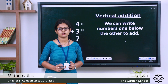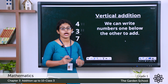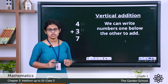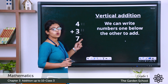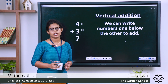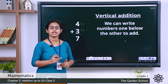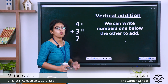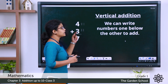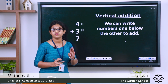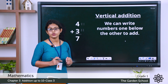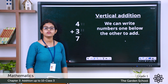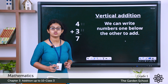Now let's see vertical addition. What is vertical addition? That is writing numbers vertically — one below the other. For example, 4 plus 3 written vertically has 3 below 4. For this you can also draw lines. For number 4 draw 4 lines, then for 3 draw 3 lines. Counting: 4, 5, 6, 7 — it gives you a total of 7.